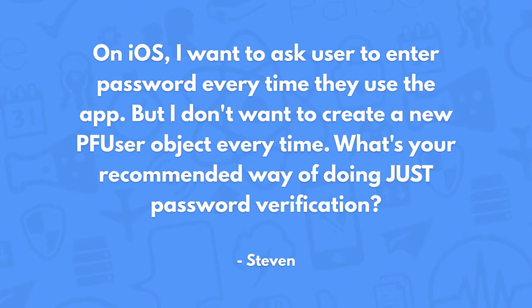On iOS, I want to ask the user to enter a password every time they use the application, but I don't want to create a new PF user object every time. What's the recommended way for doing just password verification? You don't really need to log the user out using PF user, since you're never allowing them to use the application before they enter a password. You can still have the PF user and just take the password, hash it, store it in user defaults or on disk, and check the hash against the new password the user enters in a form.